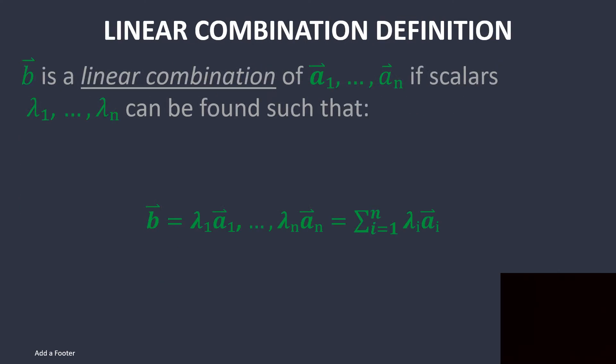Then another important thing, which is a definition from linear algebra, is that a vector b is a linear combination of vectors a_1 through a_n if scalars can be found that can basically transform vectors a into vector b.